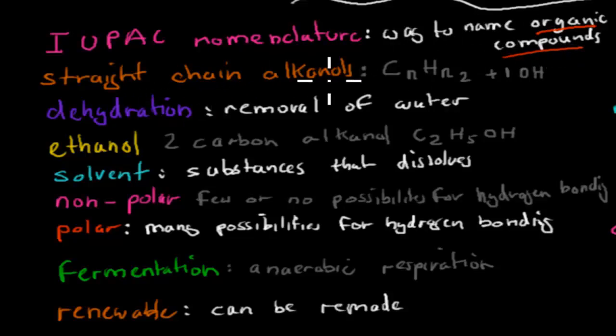A straight chain alkanol, so that was the word alkane with an ole in the end. And these were your alcohols. So this is CnH2n+1OH. So this OH group, the hydroxide group, makes an alkanol.